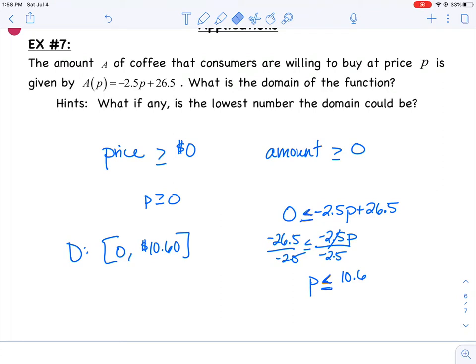Well, the amount also probably can't be negative either, right? It doesn't make sense to sell a negative amount of coffee. So our price has to be greater than or equal to zero. But our amount of coffee that we sell probably has to be greater than or equal to zero, or else it doesn't really make any sense.